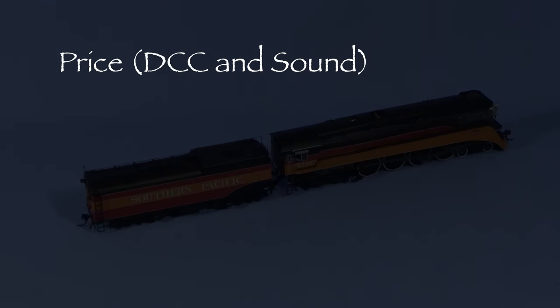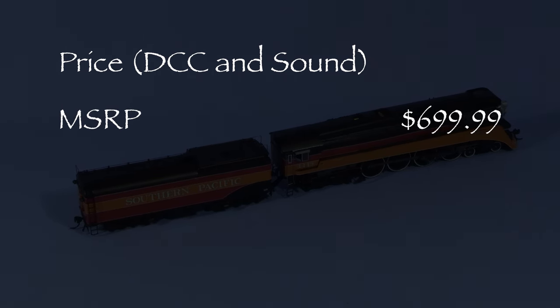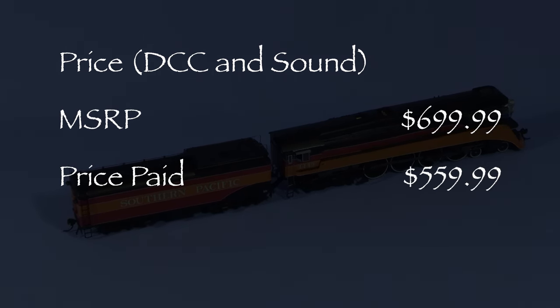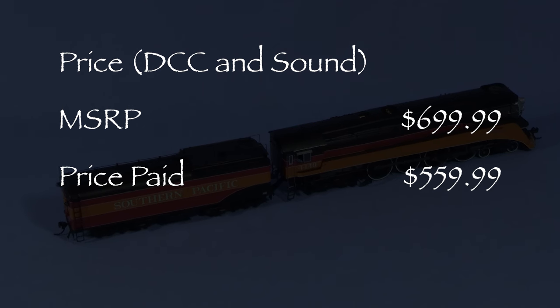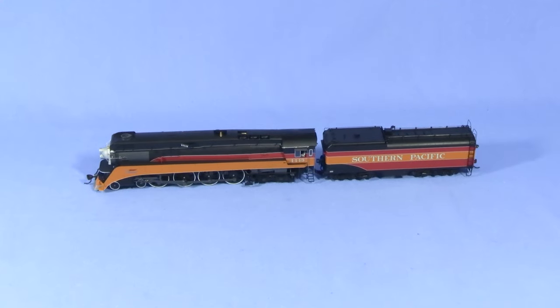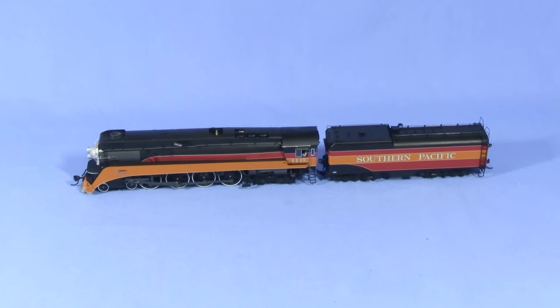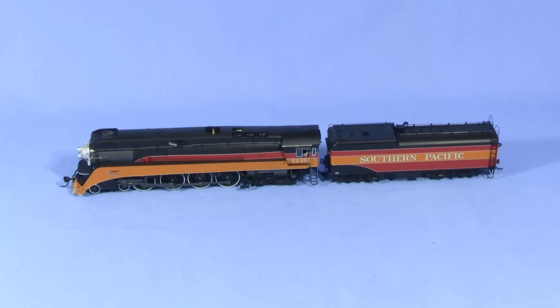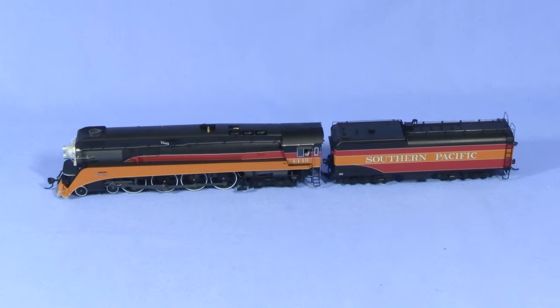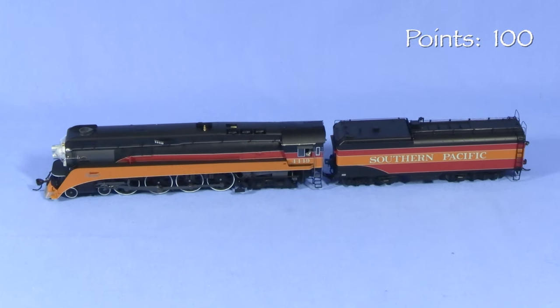Broadway Limited also offers this model in other color schemes including in-service versions in different numbers, 4449 in Freedom Train colors, and 4449 in its more modern appearance. The MSRP for this DCC and sound equipped model is $699.99. I got my model for $559.99 from Factory Direct Hobbies. At time of filming, Broadway Limited does not offer this model in their DCC-ready Stealth line, which is a DC-powered model that could be easily converted to DCC by adding a decoder. We'll start the engine at 100 possible points.